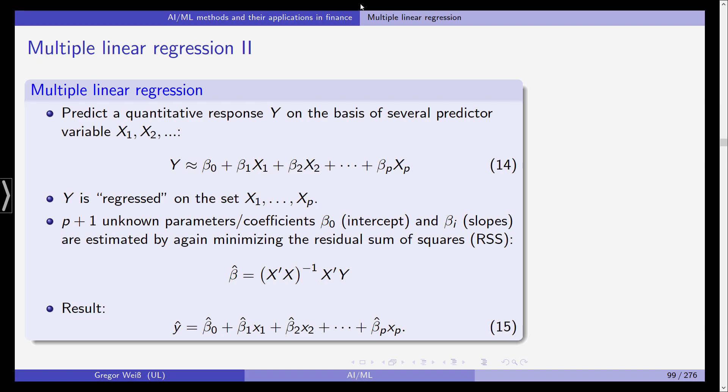And those p plus 1 unknown parameters or unknown coefficients, with beta 0 being the intercept and beta i being the slopes for the different predictors, they are estimated again by minimizing the residual sum of squares. So we again use OLS, the ordinary least squares method, to estimate those coefficients. And if you've already taken a statistics class, you will probably know that the vector of coefficients, beta hat, is given by X transposed times X (these are the matrices of those observations for X1 until Xp). So you take the variable of X observations, X, transpose it, multiply it with X itself, take the inverse, and then multiply it again with the transpose of X times Y. And you get those OLS coefficients in matrix notation.